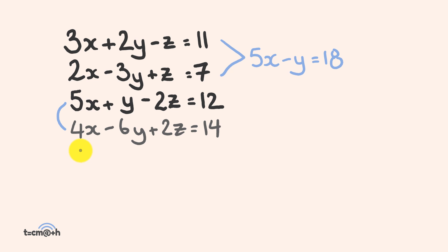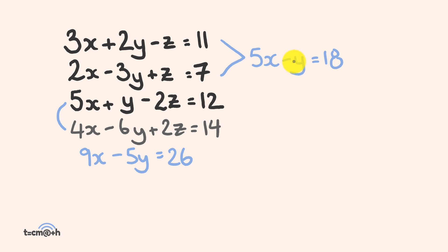Now we combine the modified equation two with equation three. 5x plus 4x gives us 9x. Positive y minus 6y gives us negative 5y. Negative 2z and positive 2z cancel each other out. This equals 12 plus 14, which is 26. So now we have two equations, shown in blue, both with two variables — x and y.